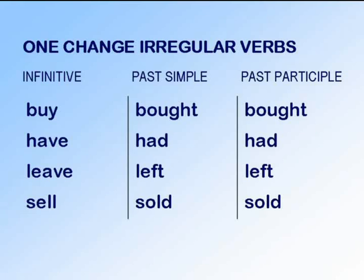The second family of irregular verbs, the one-change verbs. The past simple is the same as the past participle, which is the same for regular verbs. Now listen and repeat: buy, bought, bought. Have, had, had. Leave, left, left. Sell, sold, sold. And now quickly: buy, bought, bought. Have, had, had. Leave, left, left. Sell, sold, sold.